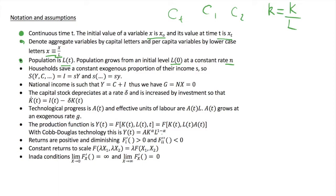We also assume that households save a constant proportion of their income, this proportion being s. So savings, which equal investment in equilibrium, are equal to the savings rate s multiplied by output. In per capita terms, savings per capita equal the savings rate s multiplied by output per capita, lowercase y.